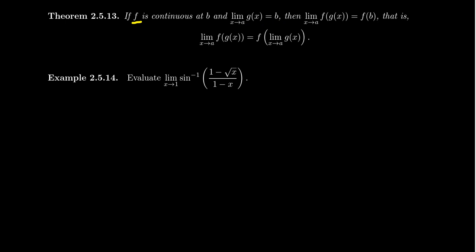Then if b is the limit of g and f is continuous at that number b, when we compose them together — so this right here is f of g of x — if you take the limit as x approaches a of f of g of x, because f is continuous, then the limit is just going to be f of b.